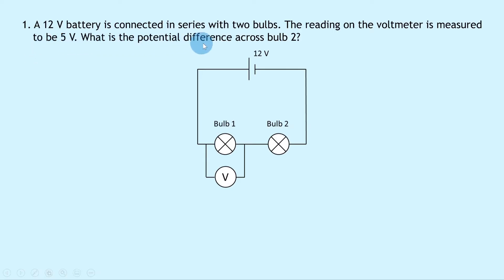Question 1 says that a 12 volt battery is connected in series with two bulbs. The reading on the voltmeter is measured to be five volts. What is the potential difference across bulb two? Well, we've got this 12 volt battery here connected in series with bulb one and bulb two, and then you've got a voltmeter in parallel with bulb one.